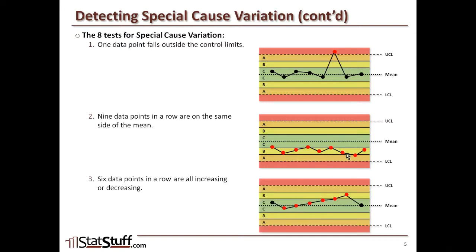The third test: six data points in a row that are all increasing or all decreasing. Sometimes you might think improvement is a good thing, but what we're looking for here is process variation.